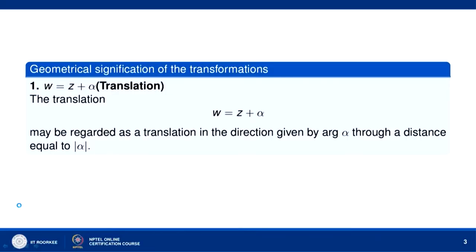Hello friends, welcome to my lecture on conformal mappings. A complex linear function is defined as a function of the form f(z) = az + b where a and b are complex constants.